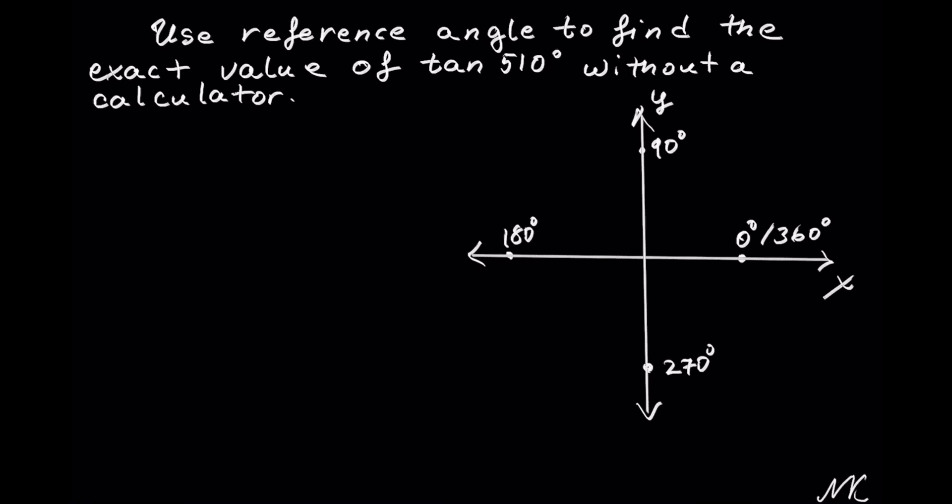But we are given tangent of 510 degrees, which means it's more than one rotation. So let's find a coterminal angle within one rotation on x and y axes. To do so, we will take 510 degrees and minus one rotation of 360 degrees. This will give us a coterminal angle of 150 degrees.